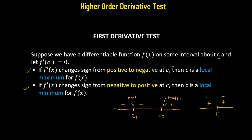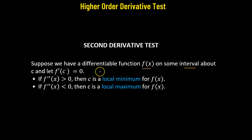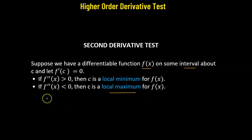There is also a second derivative test. We check differentiability on an interval about c, then set f'(c) = 0 to get critical points. We then compute the second derivative at those critical values. If the second derivative is positive, c is a point of local minimum. If it is negative, c is a point of local maximum. If the second derivative equals zero, then c is a point of inflection.